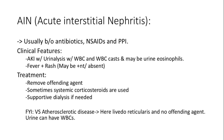Key clinical features of acute interstitial nephritis include acute kidney injury, fever, and rash. Urinalysis presents with WBCs, WBC casts, and sometimes eosinophils. Treatment involves removing the offending agent and possibly using systemic corticosteroids or dialysis.